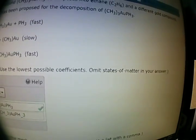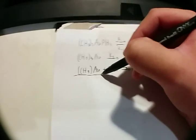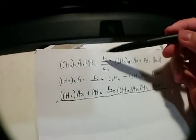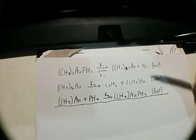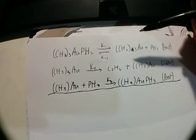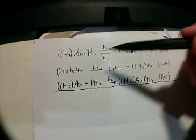The first question asks for the overall reaction using the lowest possible coefficients, omitting state of matter. To calculate the overall reaction is pretty simple — you just add everything out. If you've done Hess's law before, what you do is cancel any molecules that appear on both the left and right sides, and the leftovers will be the overall reaction. So first, CH3 and CH3AU are on different sides, so they get cancelled out.